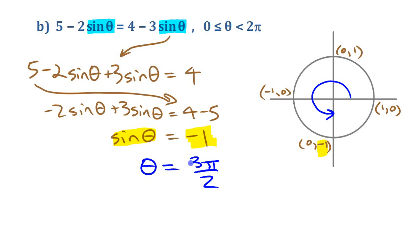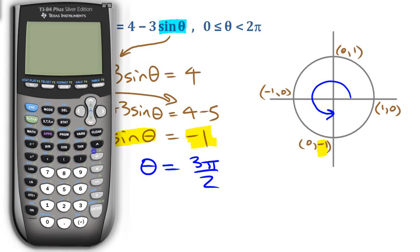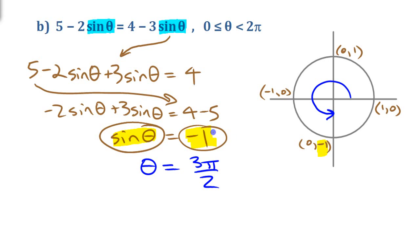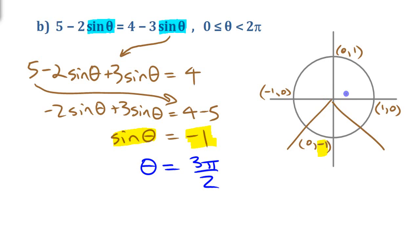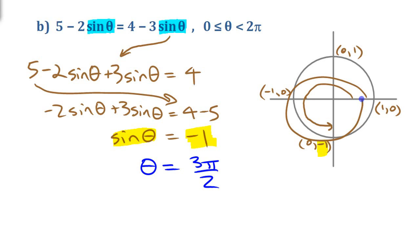If you didn't recognize this as a unit circle problem, you'd still be okay using your calculator — it would just take longer. You'd find the reference angle: sine inverse of 1 gives pi over 2. Since sine is negative in quadrants 3 and 4, the quadrant 3 angle is pi plus pi over 2, and the quadrant 4 angle is 2 pi minus pi over 2. Both approaches give you the same result.